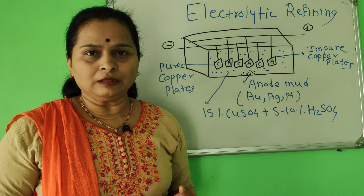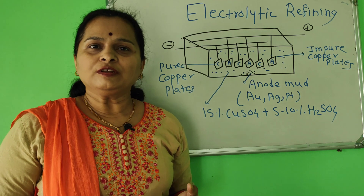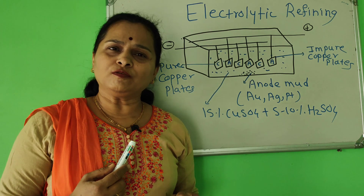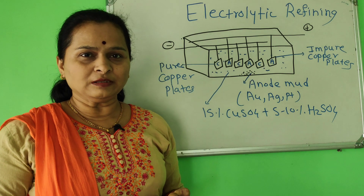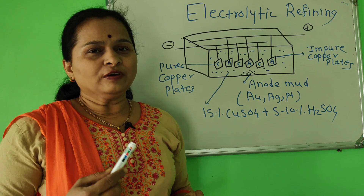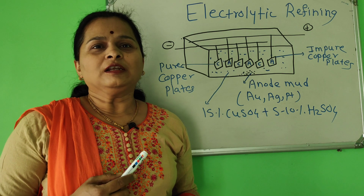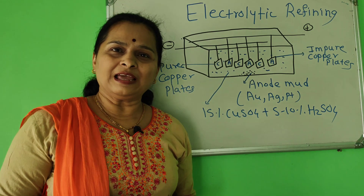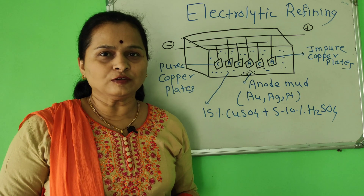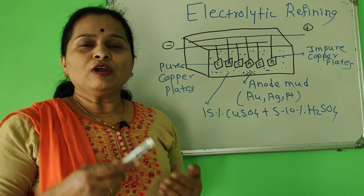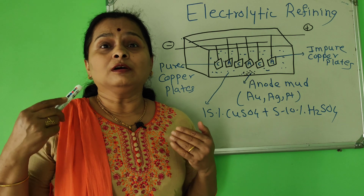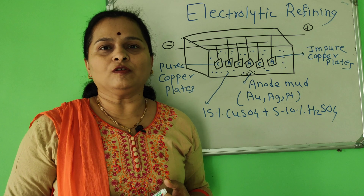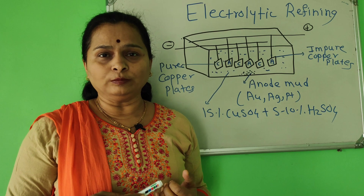We are going to talk about two parts. Some definitions of mineral, ore, then metal occurring in nature in the form of native state and combined state. Different forms of combined state, then definitions of gangue or matrix, flux, slag, and metallurgy. Then we have seen the flow chart of metallurgy — how extraction of metal takes place from the ore.